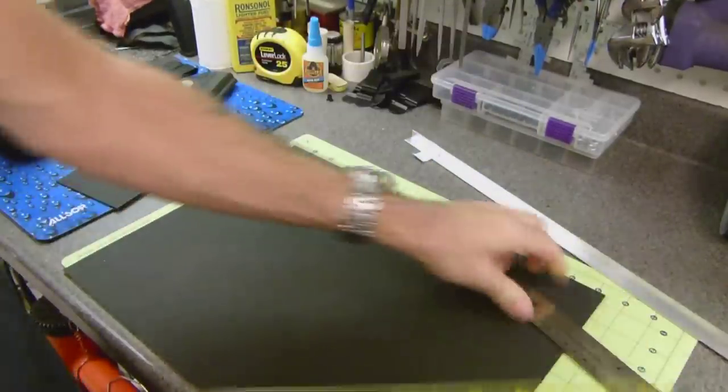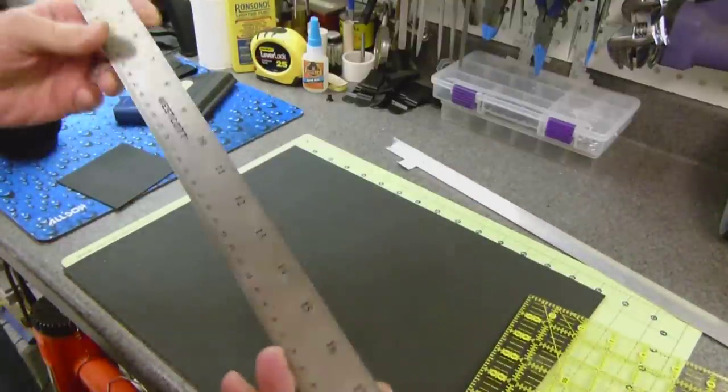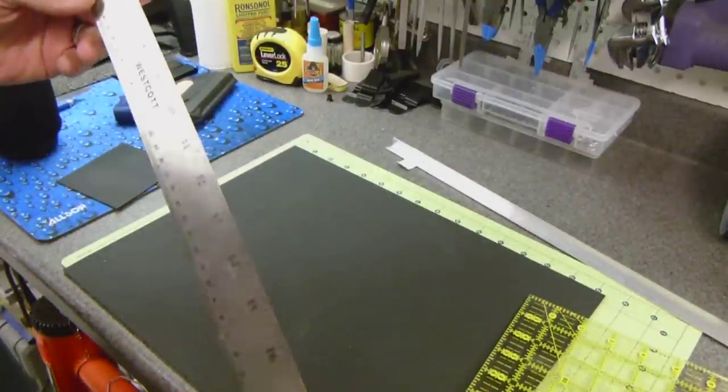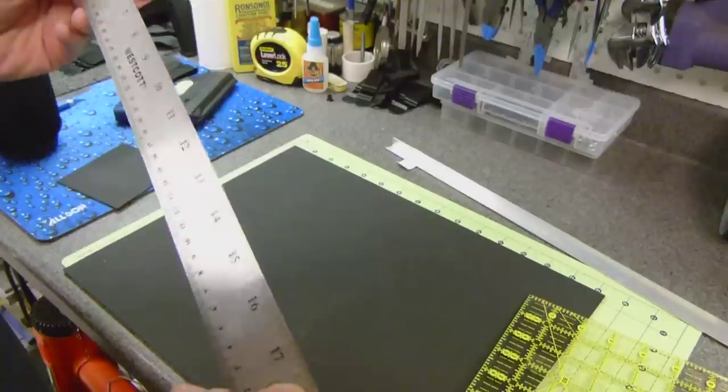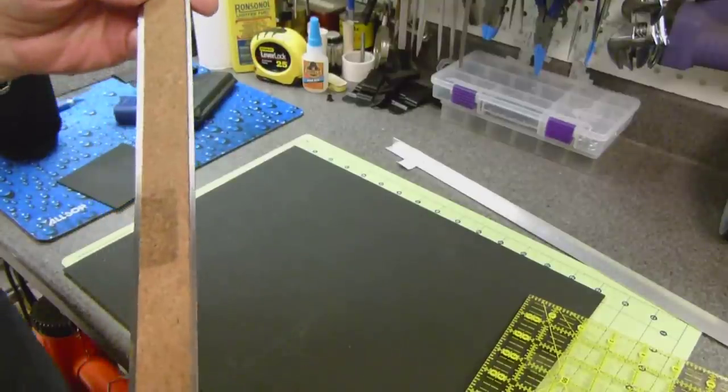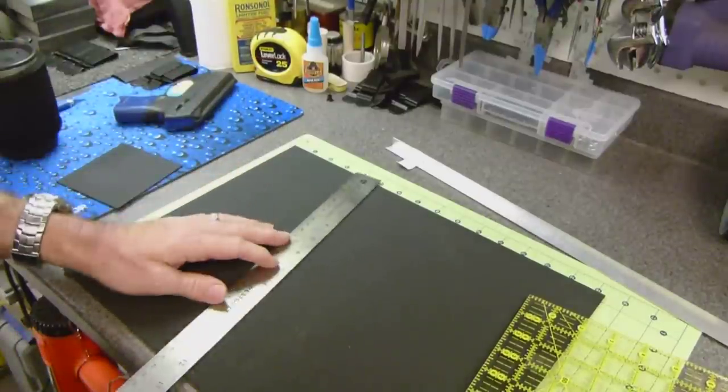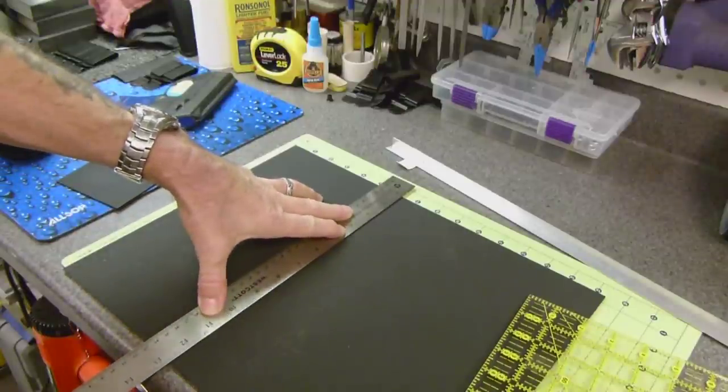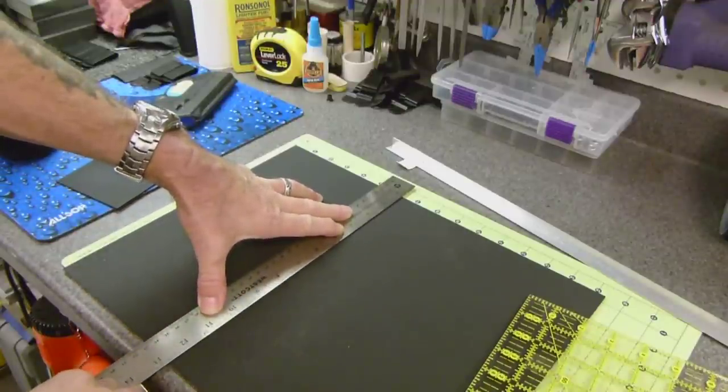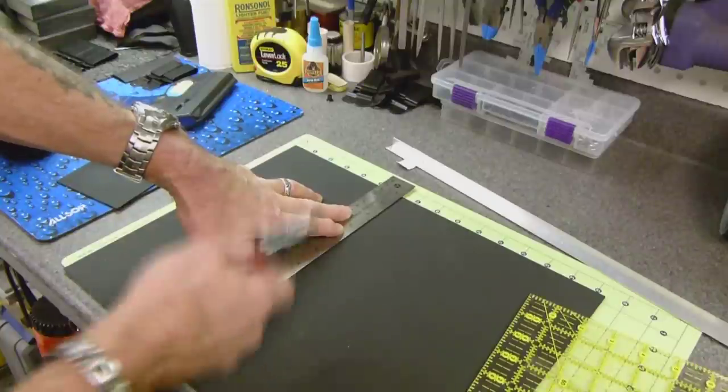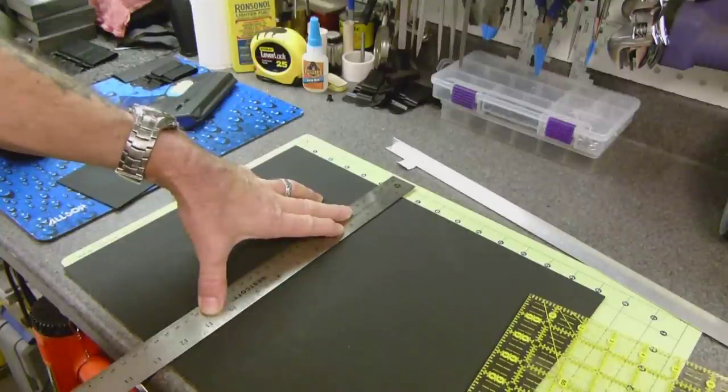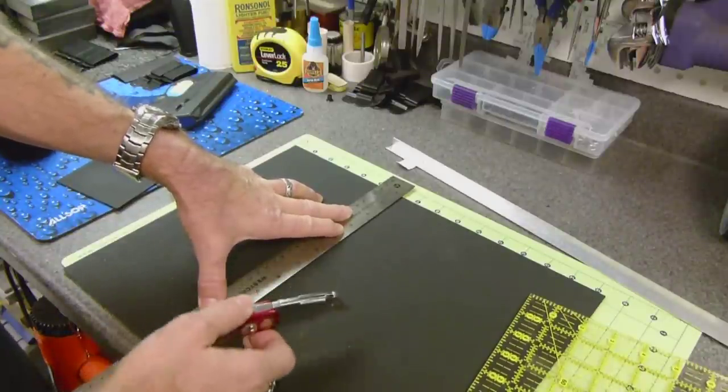And basically the other one that I used, this is the go-to rule. Just a cork backed stainless steel rule. Very good for not wanting to slip out on you because the cork holds real well. It holds up well to a knife. You don't have to worry about it cutting the plastic or anything.